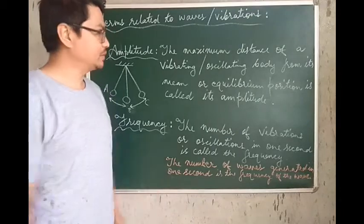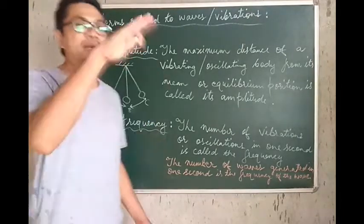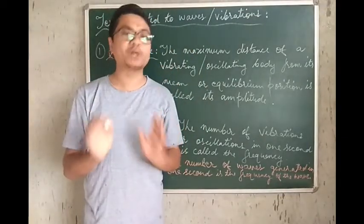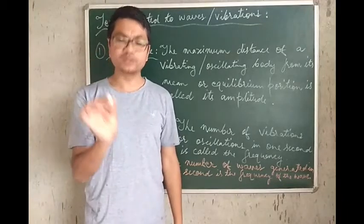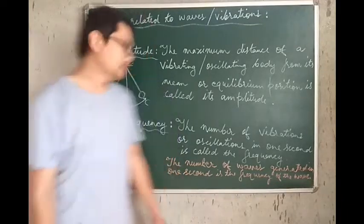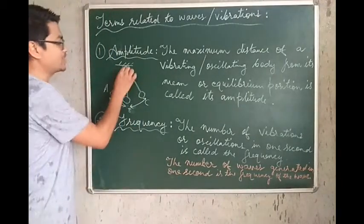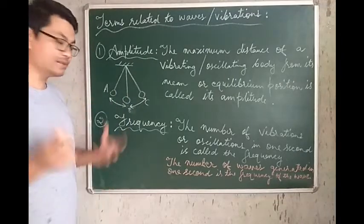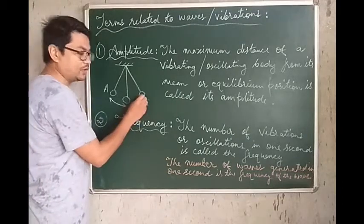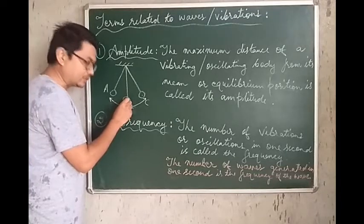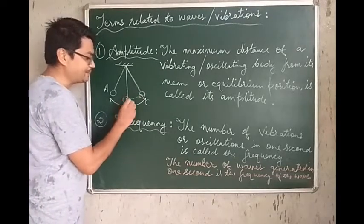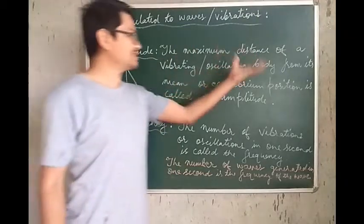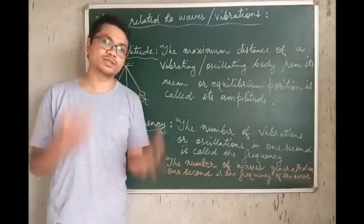Let us see what amplitude is. When a body is oscillating or vibrating, any vibrating or oscillating body will have something called its mean position or equilibrium position — the position at which the body is eventually going to come to rest. The equilibrium position is generally the in-between position, exactly between the two extremes, and thereby it is also called the mean position. The distance of the extreme point from the mean position is what is called amplitude — the maximum displacement of the oscillating body from its mean position.